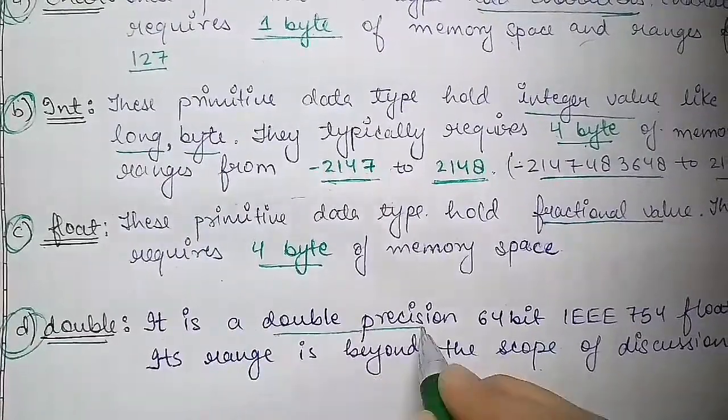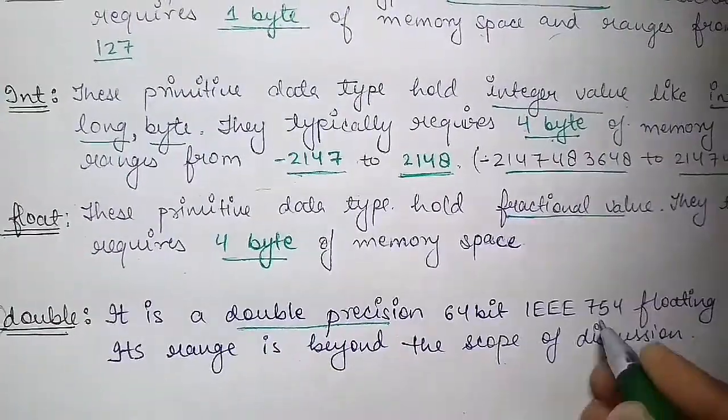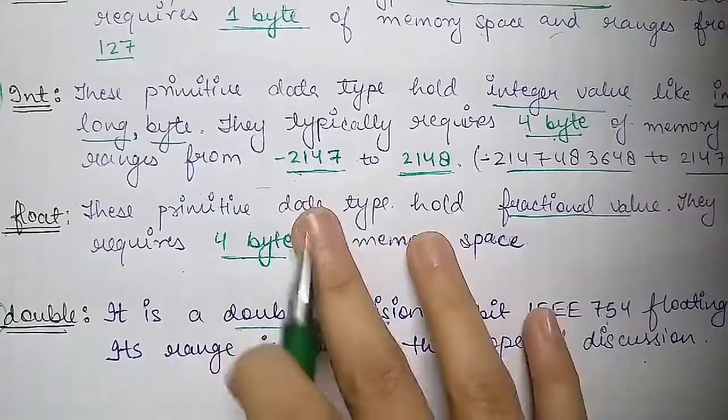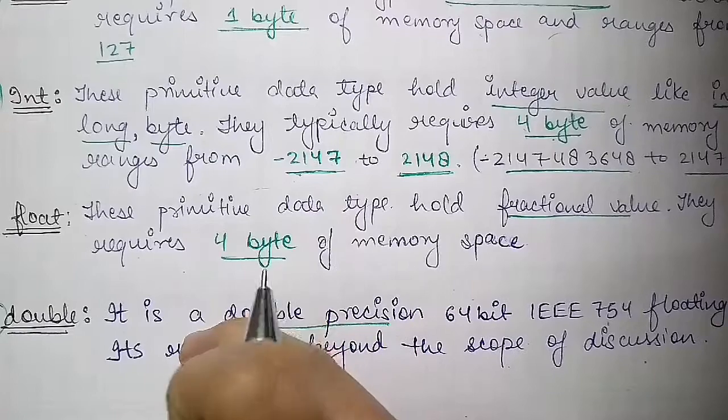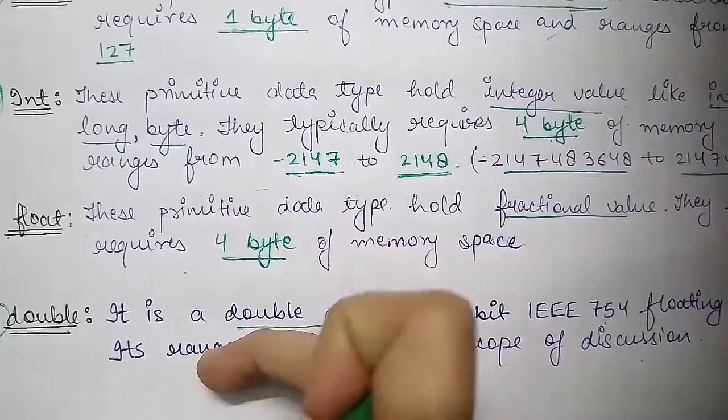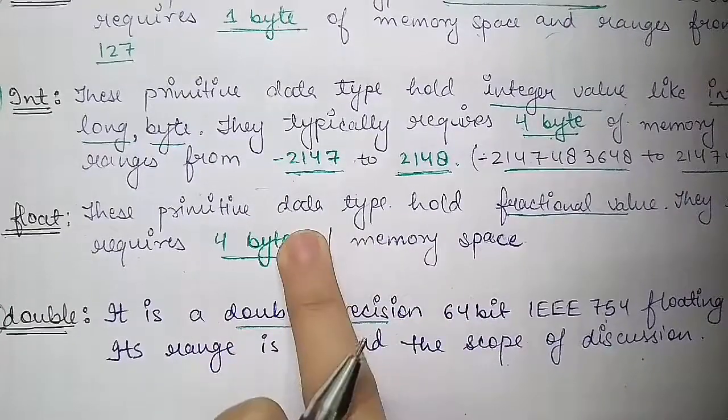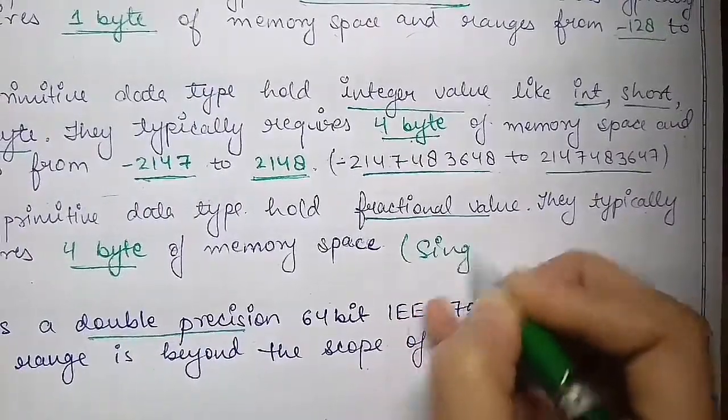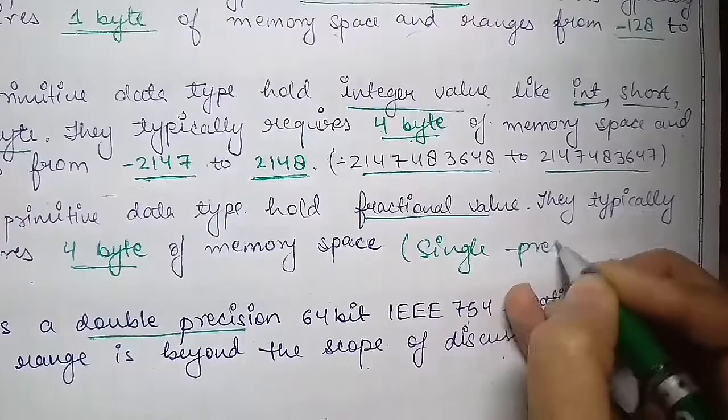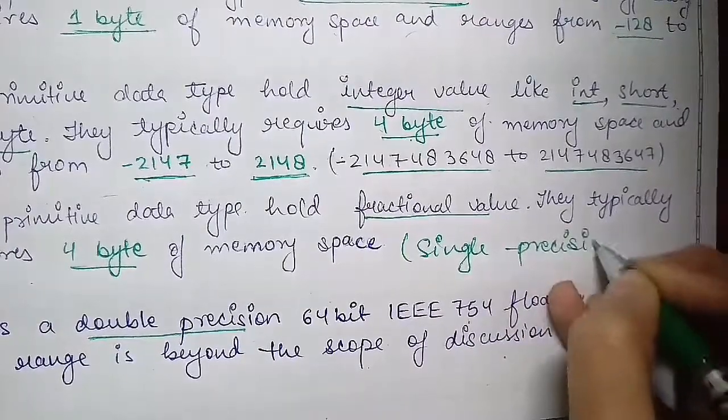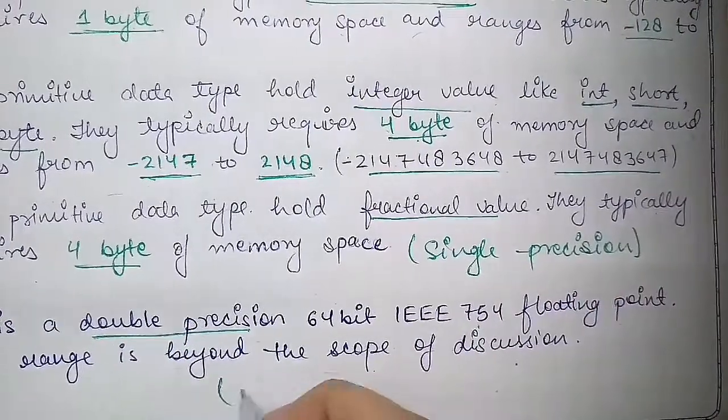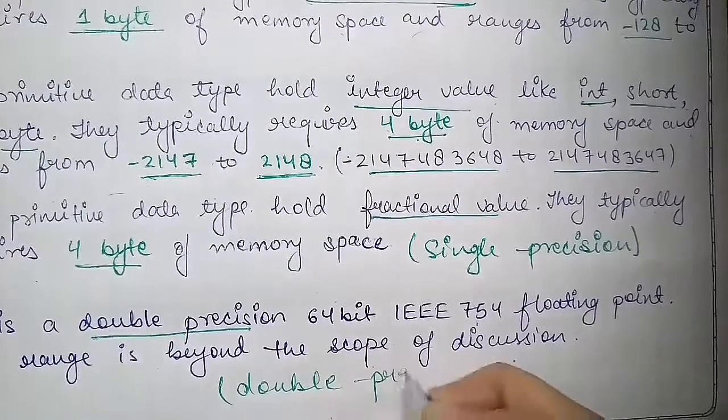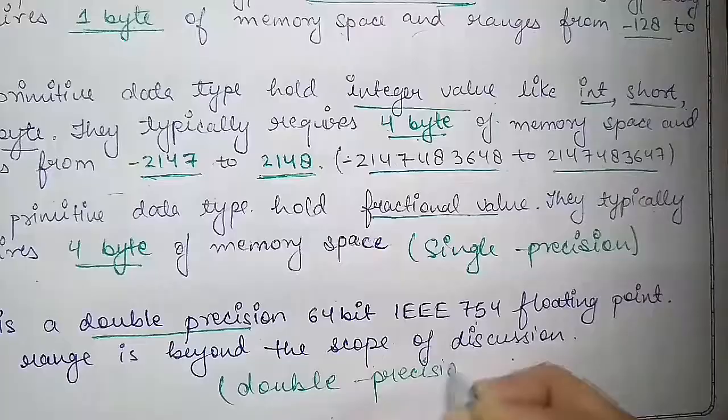Double: what happens here we have double precision value, 64-bit IEEE 750. Its range is beyond the scope of discussion. The basic difference is float which is fractional and double which is fractional, but float is single precision whereas double is used for double precision value.